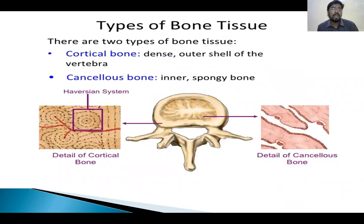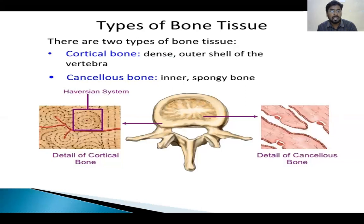The vertebral bodies are made up of two types of bone tissue. One is cortical bone, which is the outer part of the vertebral body and is dense. And the inner spongy type is called cancellous bone.